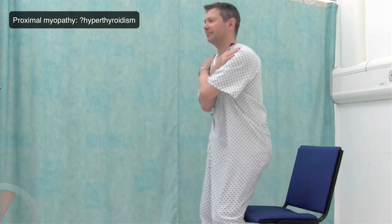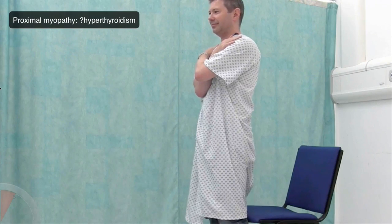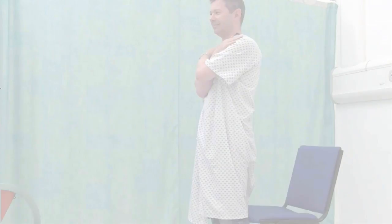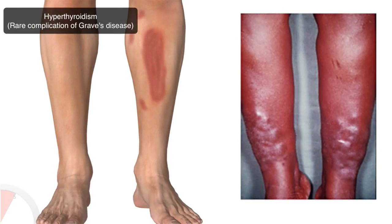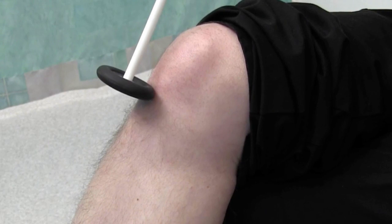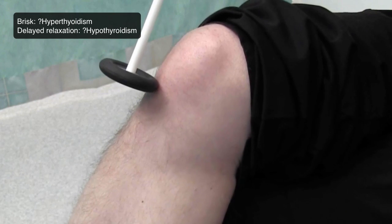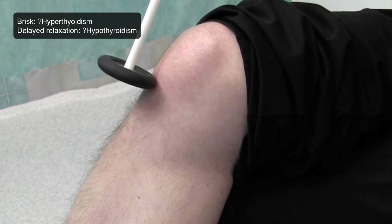To assess for proximal myopathy, ask the patient to stand from the sitting position without using their hands. Examine the shins for signs of pre-tibial myxedema. Finally, examine for brisk or delayed relaxation of the reflexes.